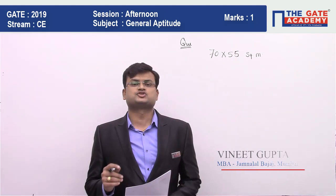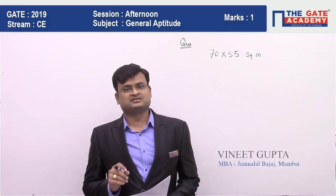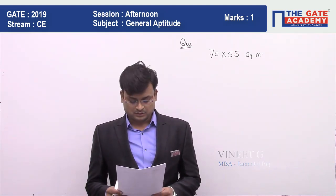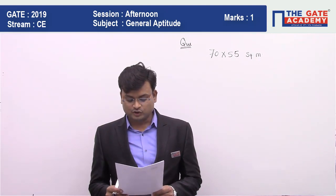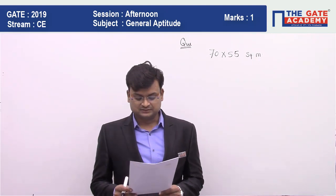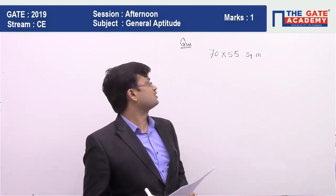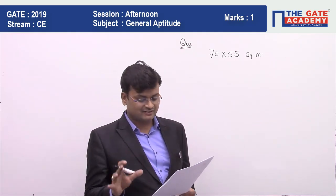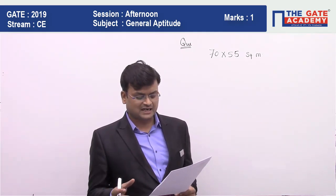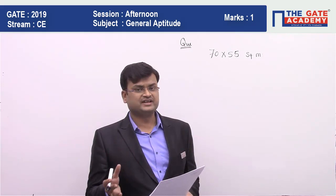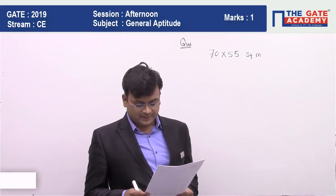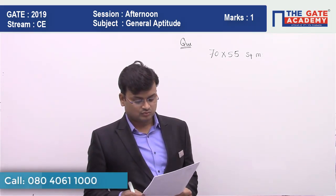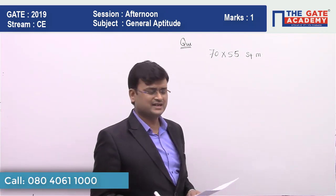In this video we'll be solving a general aptitude question from geometry. A man wants to make a carpet for a floor of dimension 17 × 225 square meters, but he has to keep an area vacant for potting flowers of 550 square meters. The price of carpet is rupees 50 per square meter. What is the carpet cost?